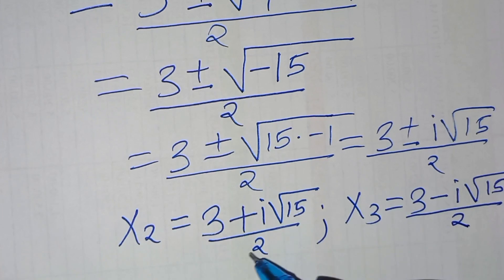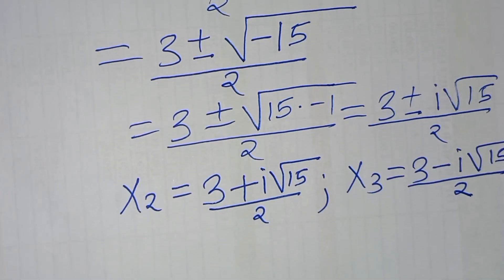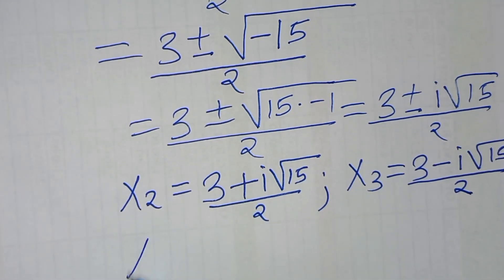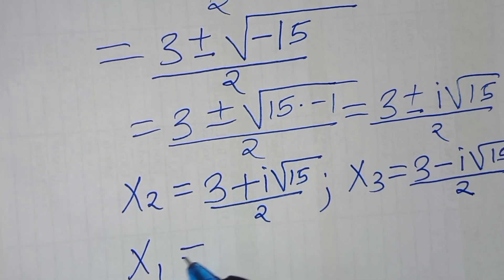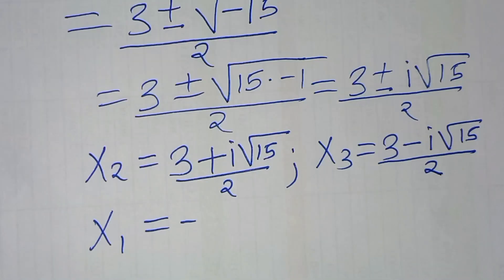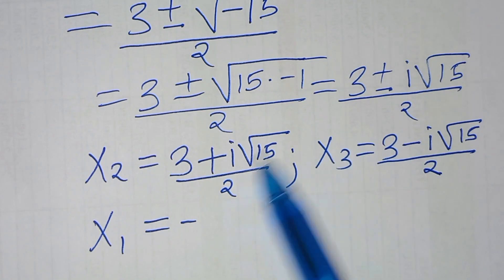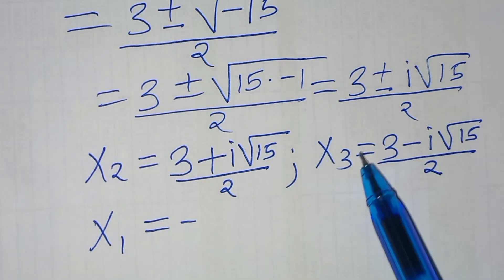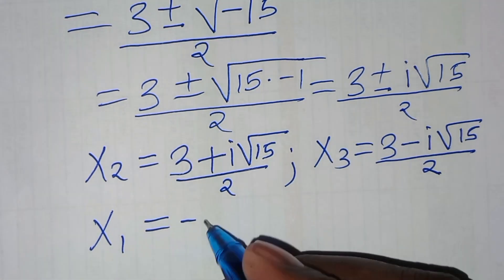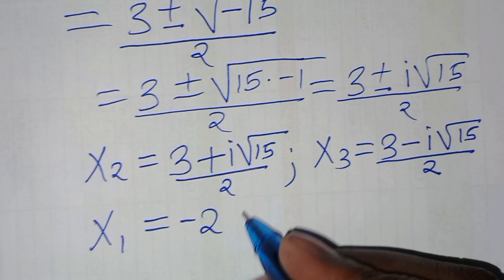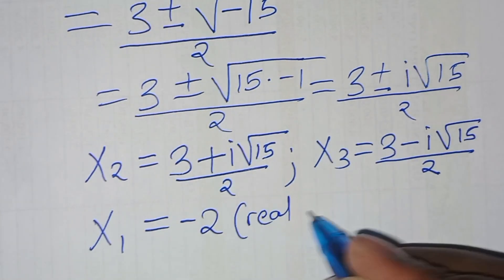These are two complex solutions. So we have x1, x2, and x3: x2 and x3 are two complex solutions, and x1 which is minus 2 is a real solution.